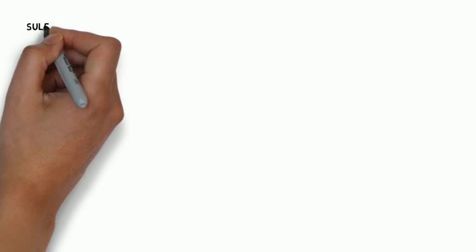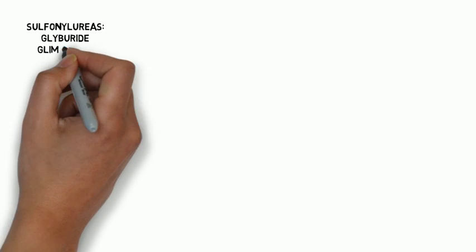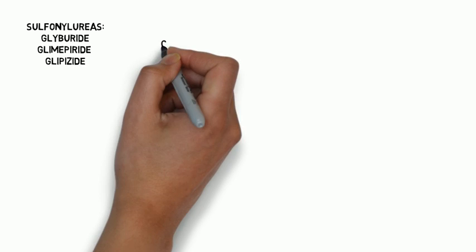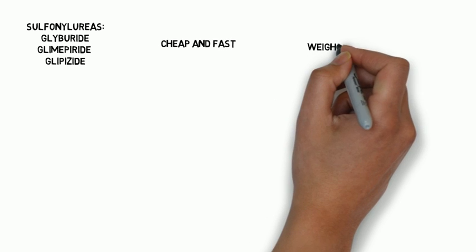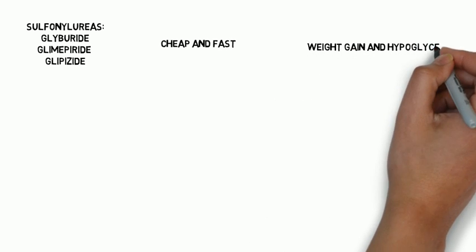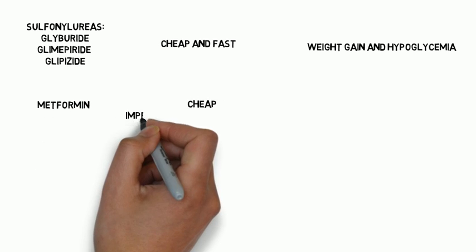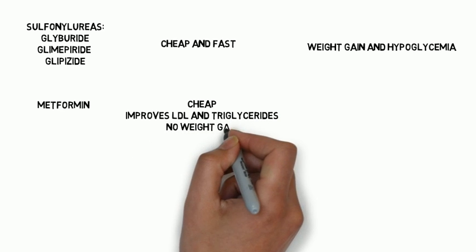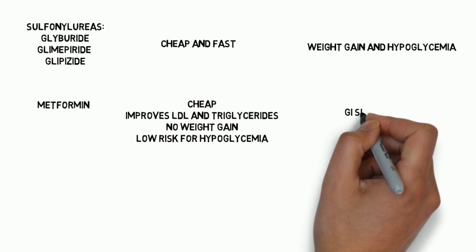Regarding oral diabetic medications: sulfonylureas such as glyburide, glimepiride, and glipizide work by stimulating insulin release from the pancreas. They are cheap and work fast, but can cause weight gain and hypoglycemia. Metformin works on the liver to decrease insulin resistance. It is also inexpensive, helps with both LDL and triglycerides, does not cause weight gain, and has a low risk for hypoglycemia.